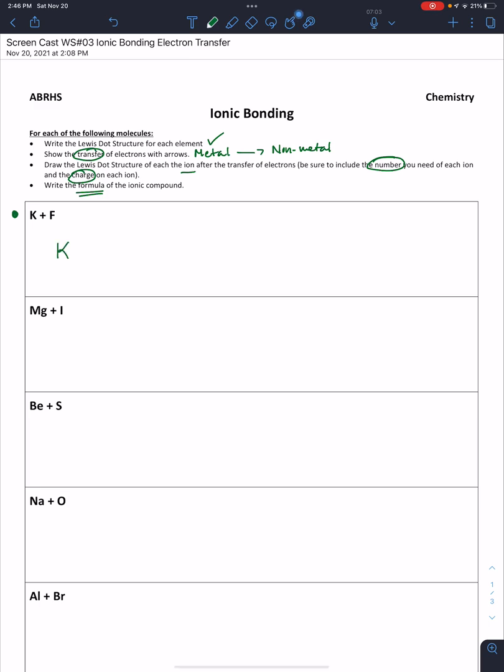The Lewis dot symbol for potassium uses its elemental symbol K, and then the number of valence electrons are represented by dots. As an alkali metal in group 1, potassium has one valence electron, so we get one dot. We look at fluorine, which is in group 17, the halogens, and it has seven valence electrons that we represent with seven dots.